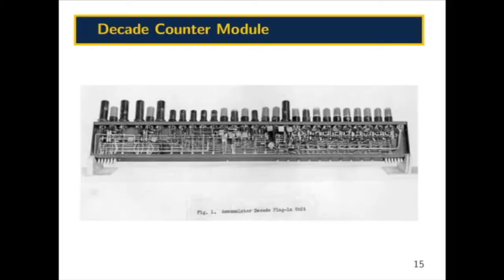Each digit is implemented by a 10-stage ring counter, as we can see in this figure right here. The 10-stage ring counter is driven by pulses that arrive over a trunk line. If pulses are received from another unit, those pulses get added to the value stored in this unit. There's a carry bit that is set, causing a 1 to be added to the next column over.